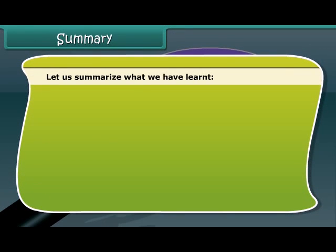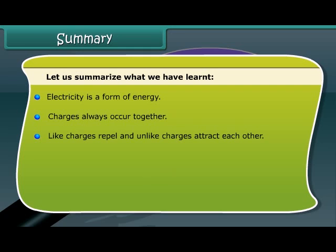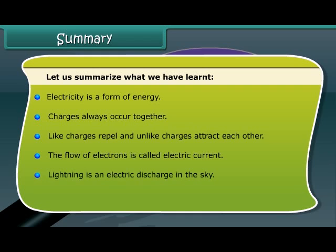Let us summarize what we have learned. Electricity is a form of energy. Charges always occur together. Like charges repel and unlike charges attract each other. The flow of electrons is called electric current. Lightning is an electric discharge in the sky. Cells are sources of electric current.